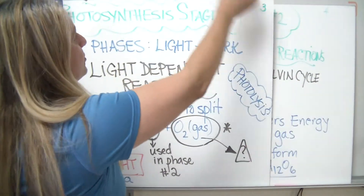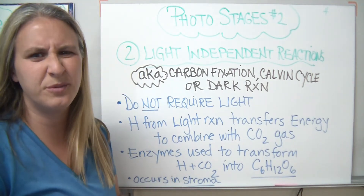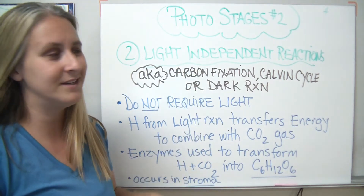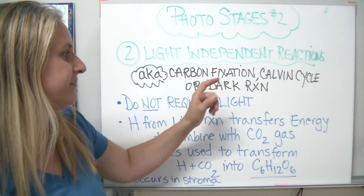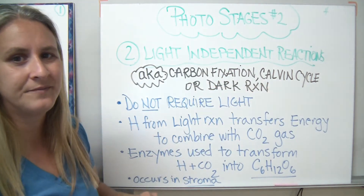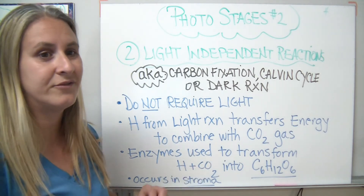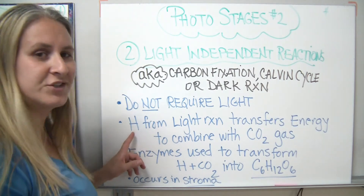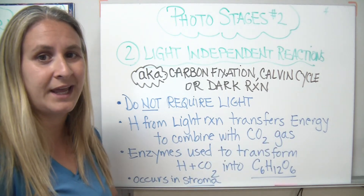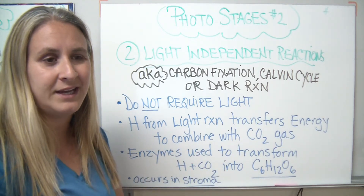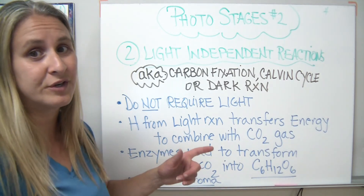Phase two of photosynthesis is called the light-independent reactions. If you're independent of light, you don't need it. The light-independent reactions have a couple of other names: carbon fixation, the Calvin cycle, or even the dark cycle. They don't require light — it doesn't mean they can't happen when it's light outside, just that they don't need it for the reaction to occur. During the light-independent reactions, the hydrogen from phase one is going to transfer energy using a carrier called NADP. When the hydrogen is attached, it's called NADPH2.